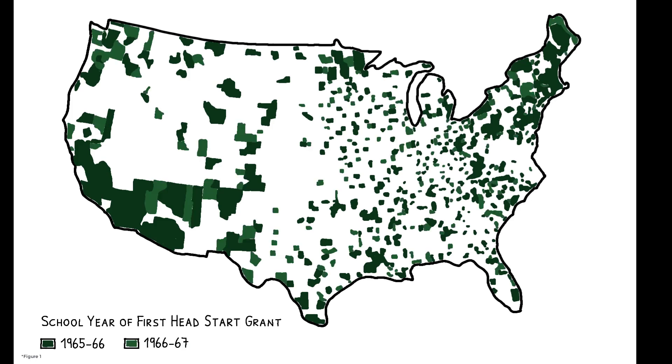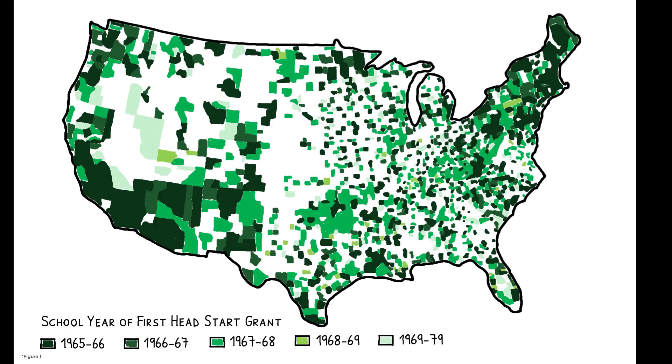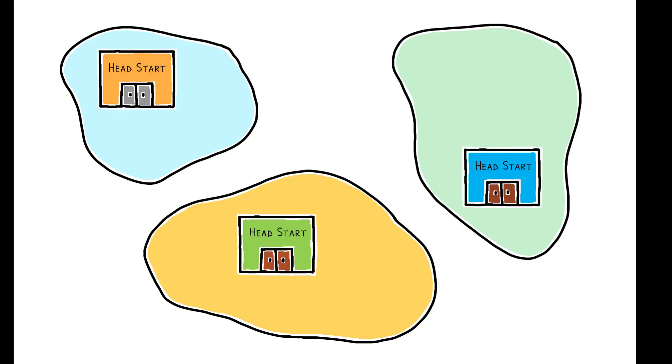First, they exploit the program's county-level rollout between 1965 and 1980. The exact timing of a county's launch depended on many idiosyncratic factors and, consistent with this, pre-existing local characteristics do not systematically predict when programs were launched.